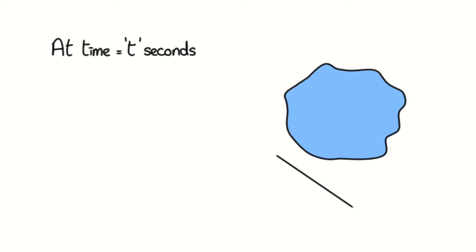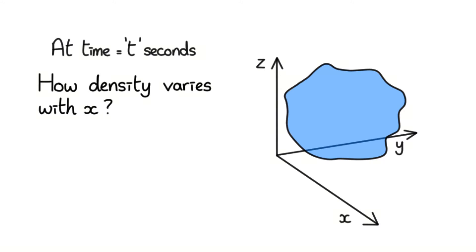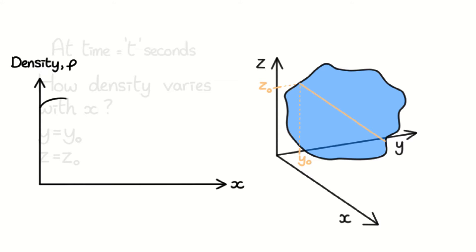Let's say we have a three-dimensional blob of fluid, at time t seconds, in a three-dimensional reference frame. And we would like to plot how density varies with x, while keeping y and z constant at y0 and z0. So we'd like to find density along this line essentially, where y is equal to y0, and z is equal to z0 everywhere along it. You'd probably expect a plot like this, something that varies smoothly, right?